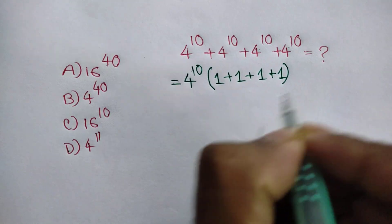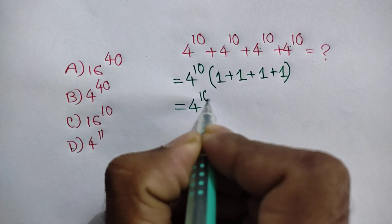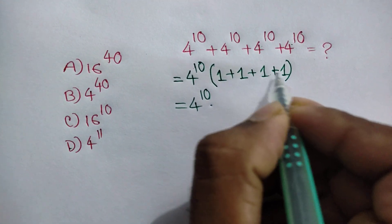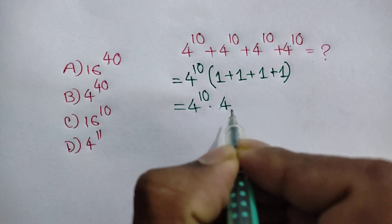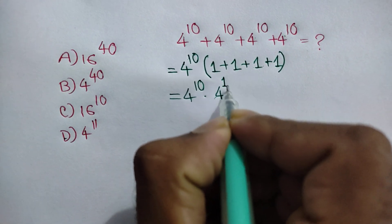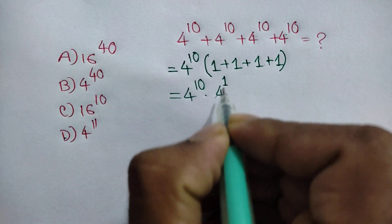Next, we can write 4 power 10 times 1 plus 1 plus 1 plus 1 is equal to 4. 4 power 1 is the same as 4, so we can write 4 power 1.